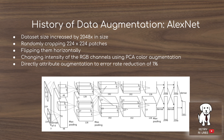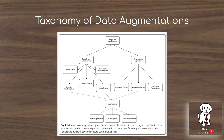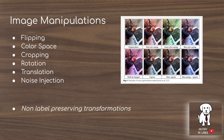This is the taxonomy of data augmentation covered in this paper. We'll talk about basic image manipulations like color space transformations, geometric transformations, random erasing, mixing images, and kernel filters. Then we'll talk about deep learning approaches like generative adversarial networks, neural style transfer, and adversarial training. Then we'll see how these can be controlled with a meta-learning controller to get even better performance from data augmentation.